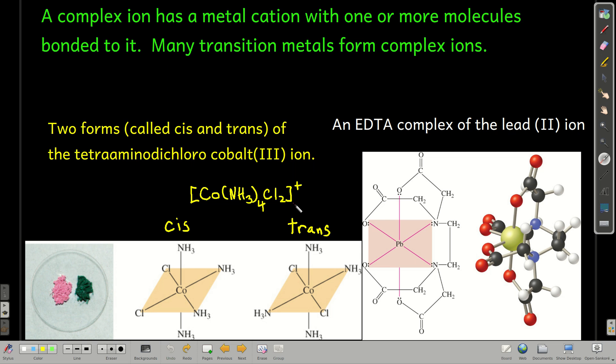A lot of transition metals tend to form these complex ions. We're going to see more about these later on when we do transition metals and coordination compounds. Just as some examples, these two compounds over here are two forms of the tetraaminodichlorocobalt(III) ion. That's the formula right there. Don't worry about the nomenclature, we'll get to that later. And these two forms are called cis and trans. This comes about from the relative positions of the chlorine atoms here. Here, they're on the same side of the molecule, that's cis. Here, they're on opposite sides, that's trans.